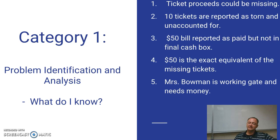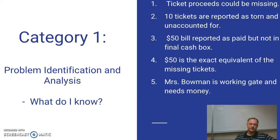I already know that Mrs. Bowman is in need of money based upon the meeting she had with Mr. Stevens before, and she happens to be working the gate. So could this be a situation where she's trying to skim a little money off the top to help fund the trip for her daughter?